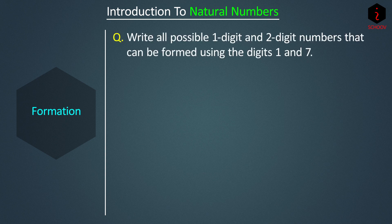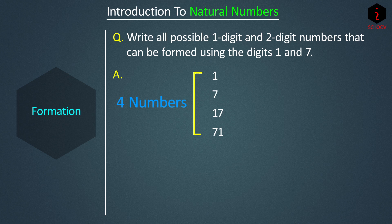To form numbers, consider: using the digits 1 and 7 each only once, we can make four numbers — 1, 7, 17, and 71. If we allow repetition, we can also make 11 and 77, giving six numbers total.